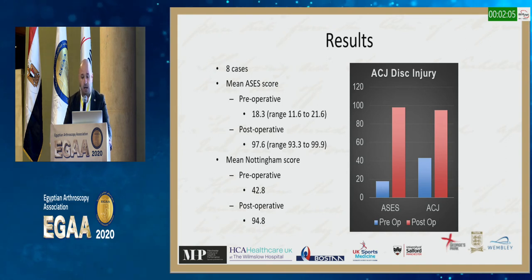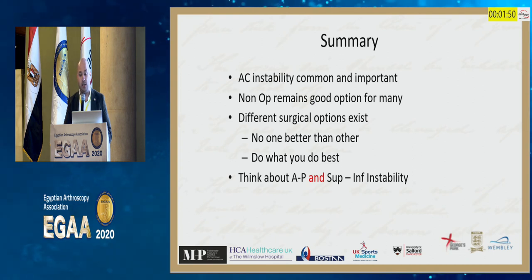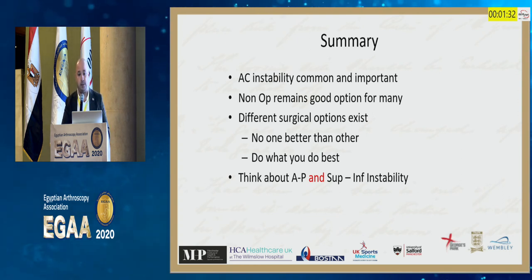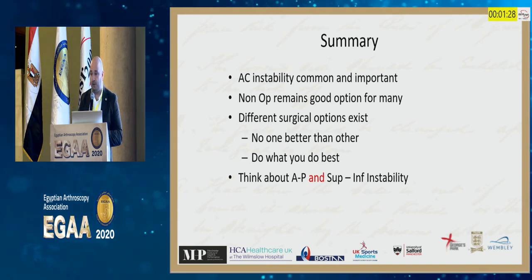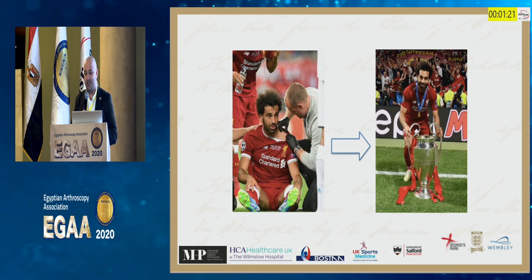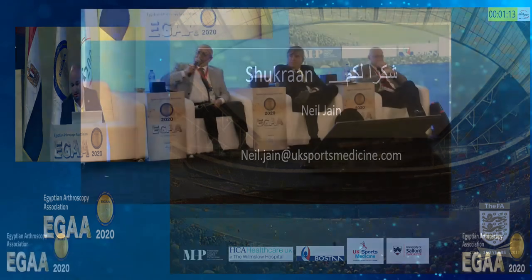In summary: AC joint instability is common and important, but most won't need an operation. Different surgical options exist and none is clearly superior, so do what's best in your hands. Strongly advise thinking about AP instability as well as superior-inferior instability, particularly when performing distal clavicle excision. Thank you. Shukran.